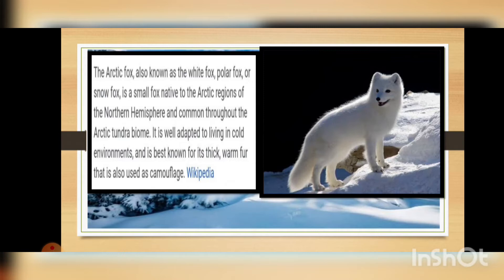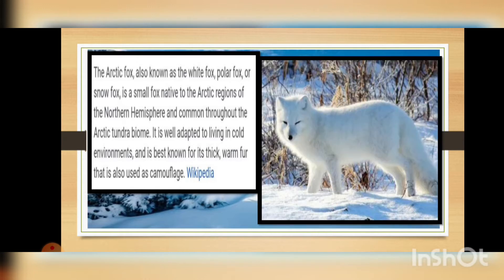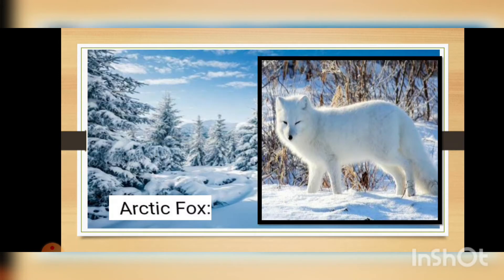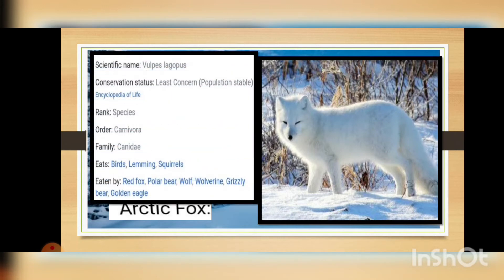The arctic fox is well adapted to living in cold environments and is best known for its thick warm fur that is also used as camouflage. Here you can see another picture of the arctic fox — it looks very much like a dog. Its scientific name is Vulpes lagopus. The conservation status of this animal is Least Concerned and the population is stable. Its order is Carnivora and family is Canidae.